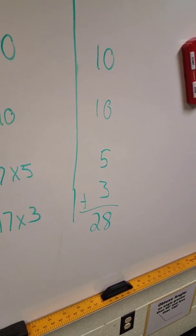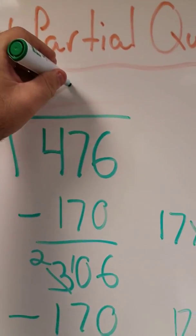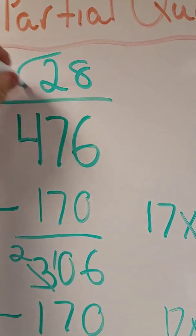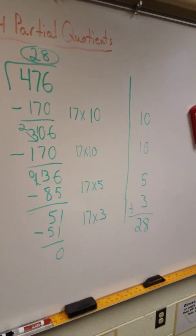So my answer is 28. 476 divided by 17 is 28. Again, I did this in chunks. I did it in parts.